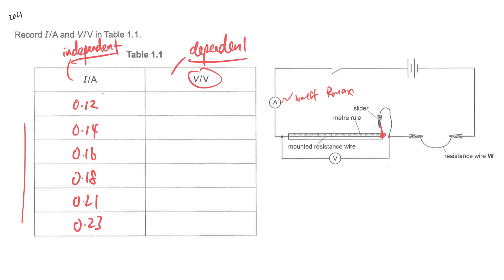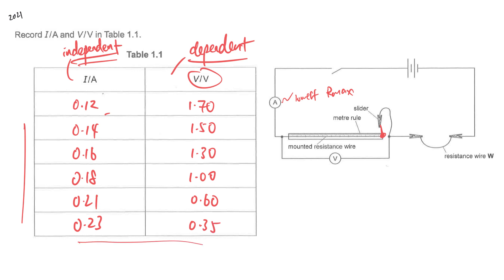The subsequent columns will be your dependent variable — the value depends on the independent variable (the I that you set). In this case it is the voltmeter reading. If I perform the experiment by putting the slider at different positions following the current I set, I will get roughly these values: 1.30, 1.00, 0.60, 0.35.